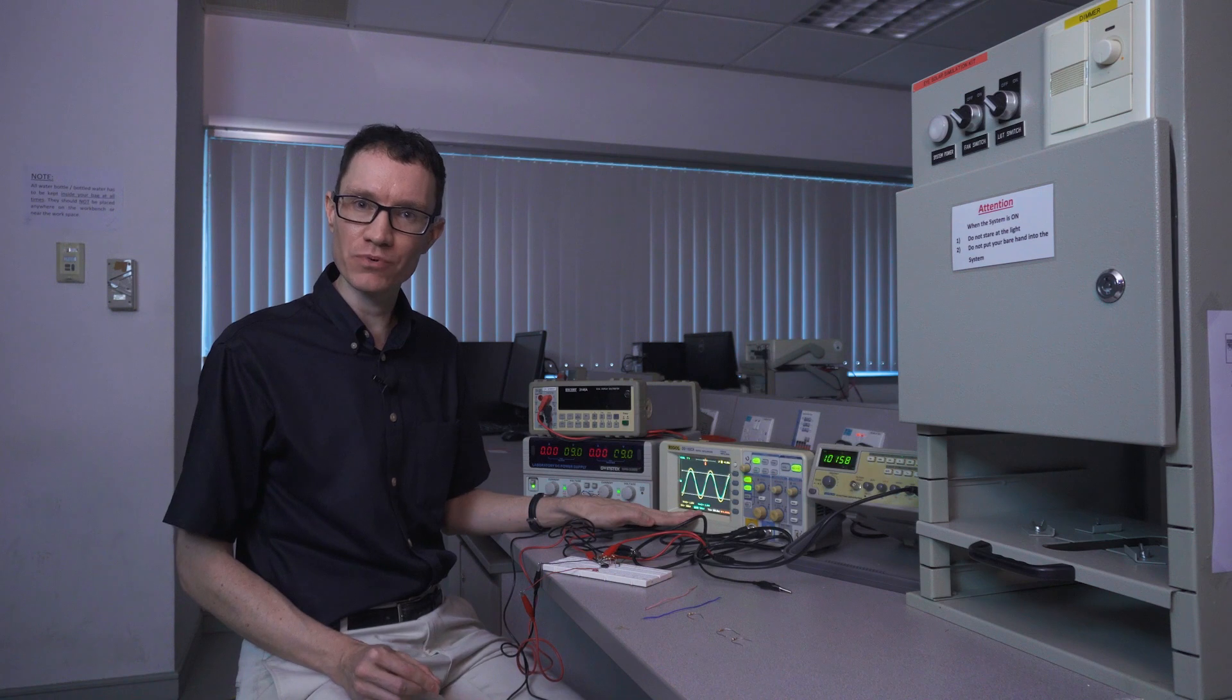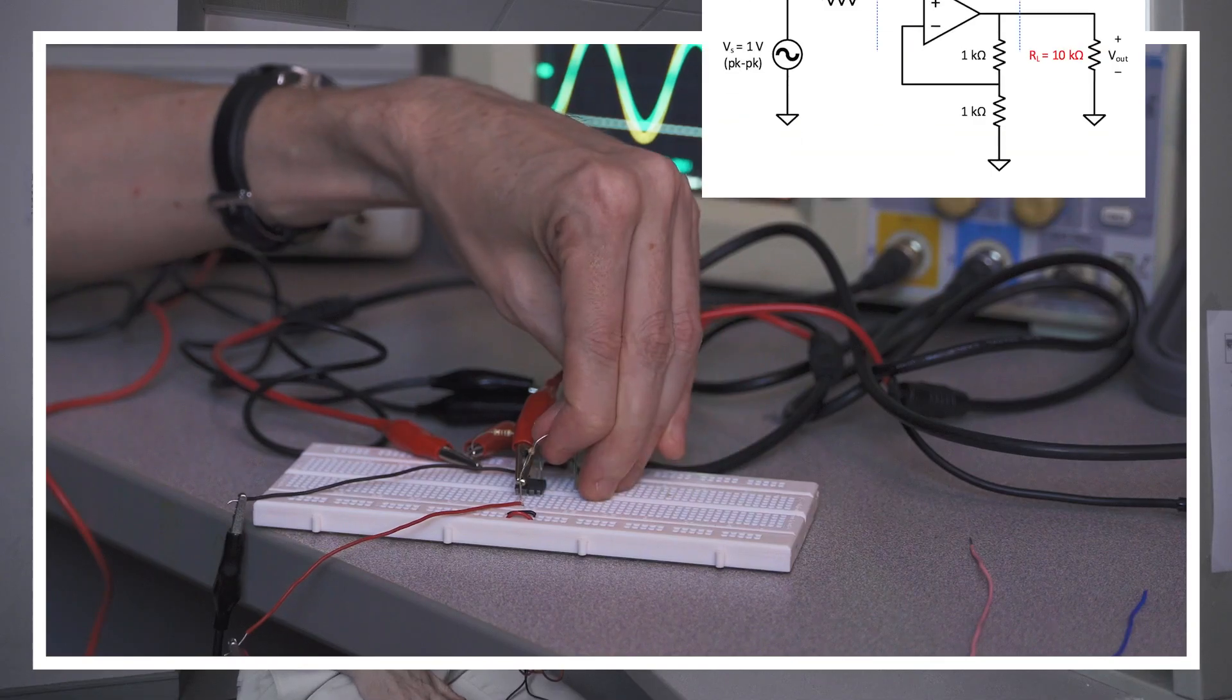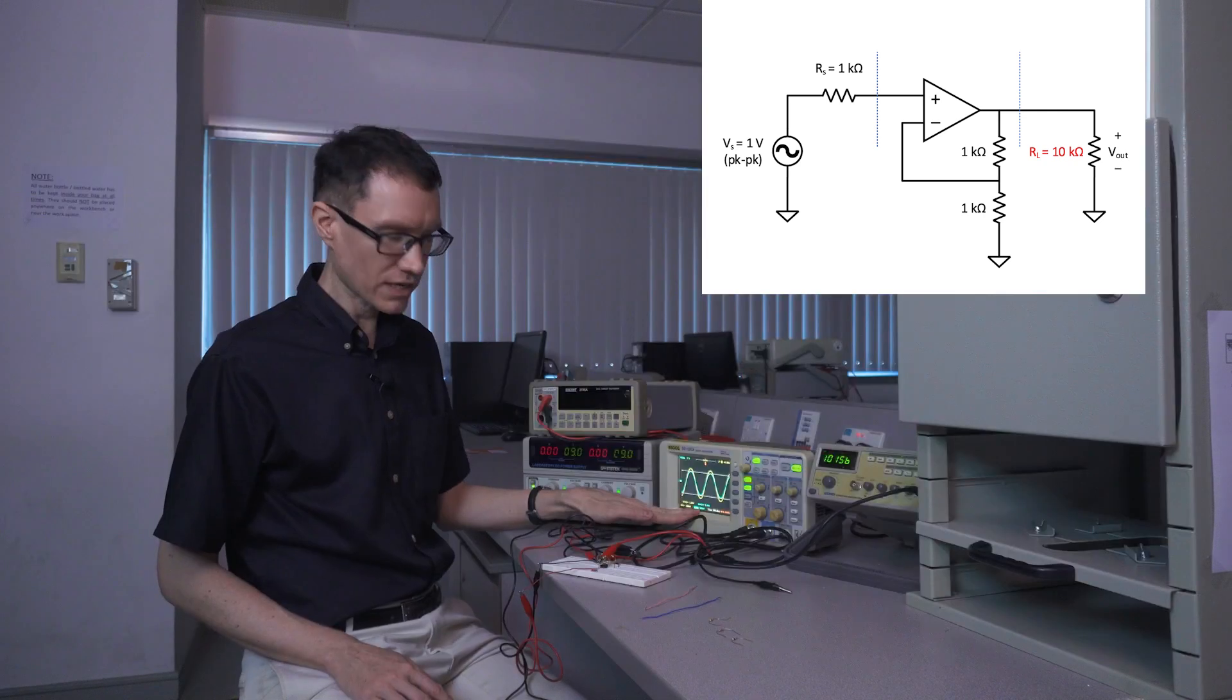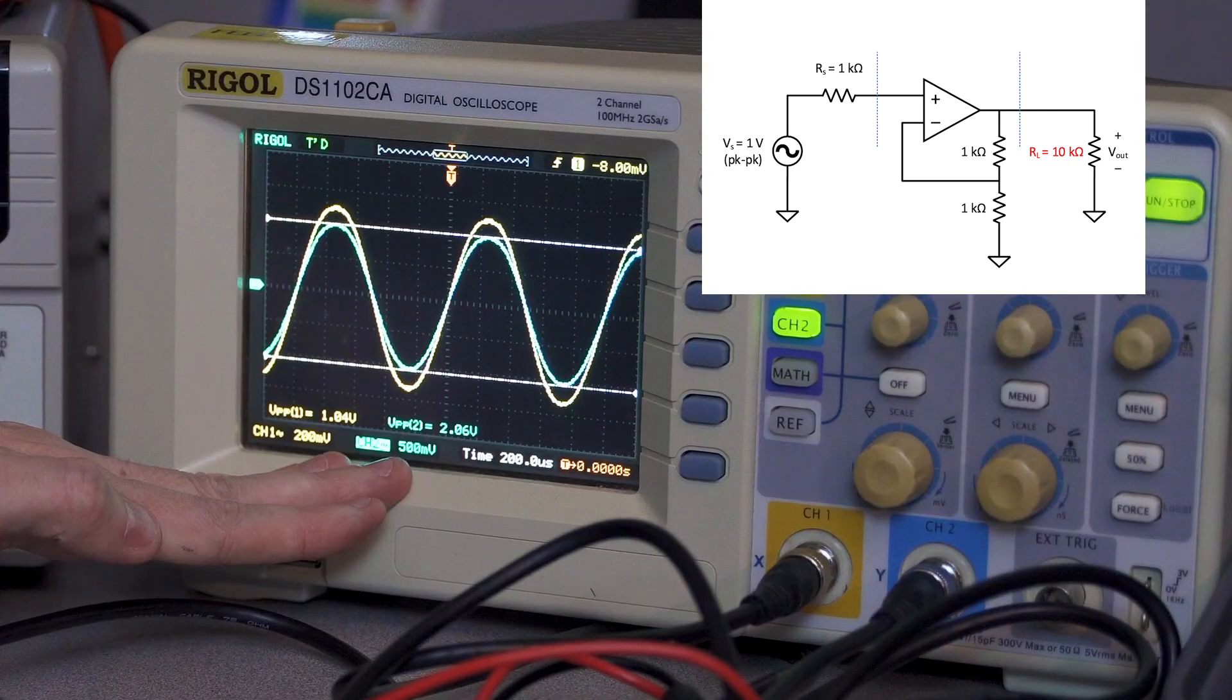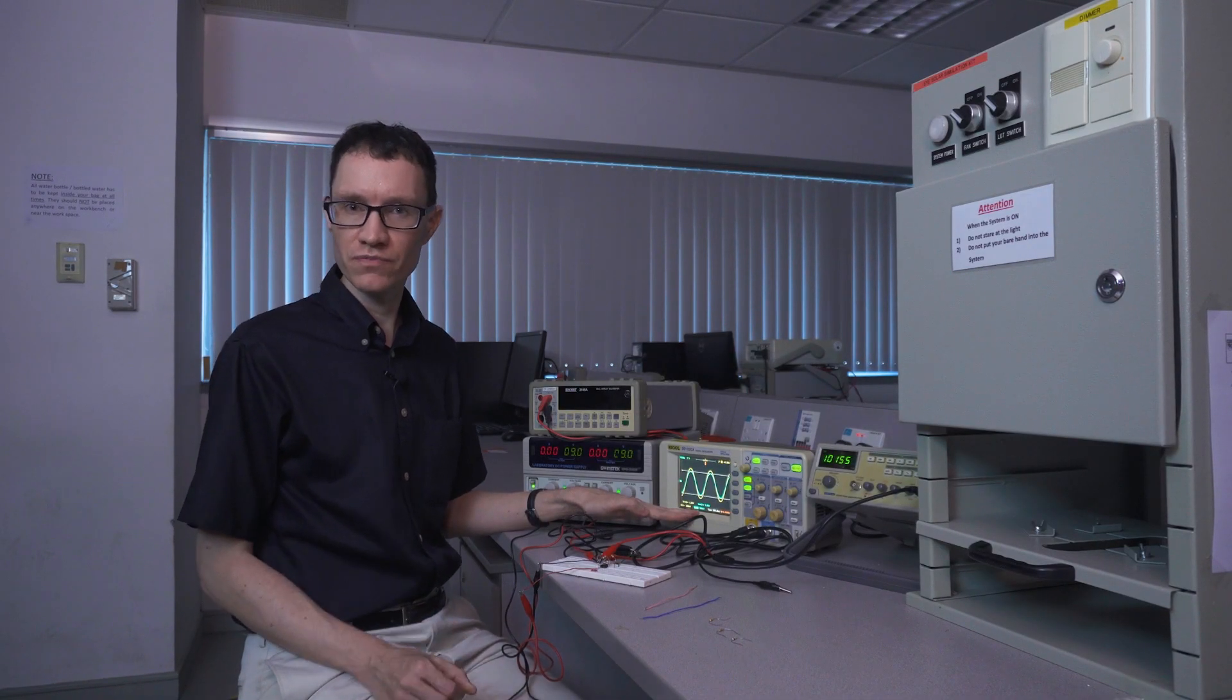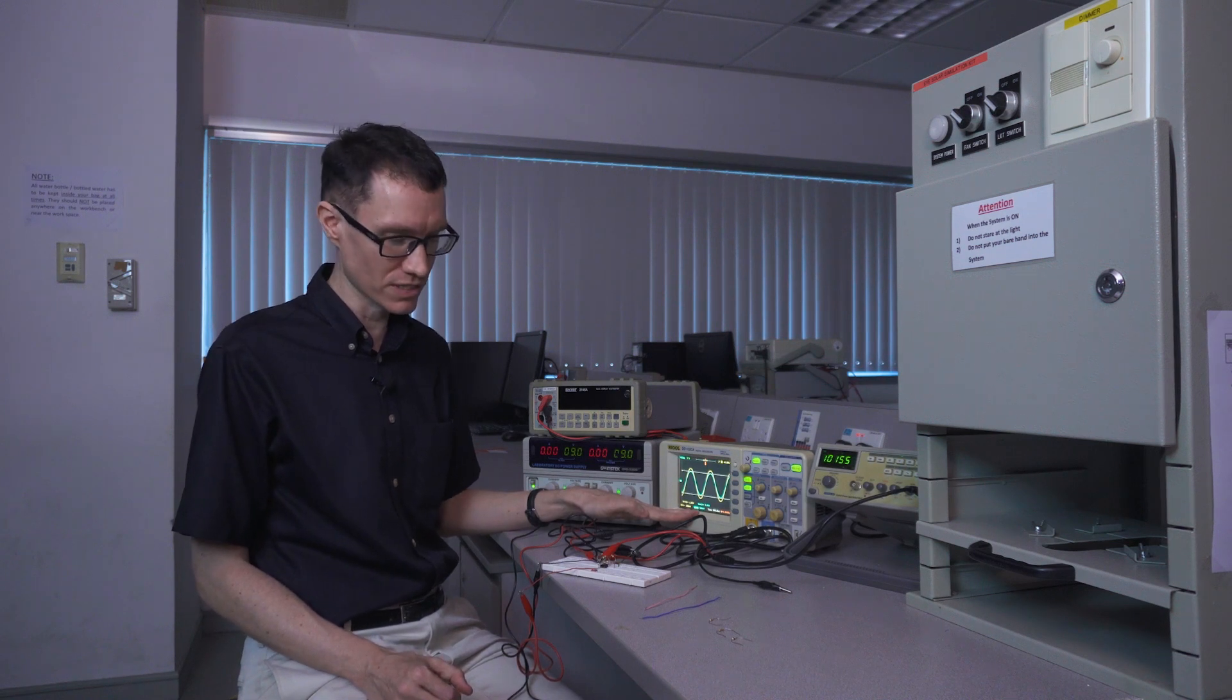Let's change the output load resistor. Let's change it to 10 kiloohms and we'll see how the peak to peak voltage changes. I can confirm that we still have a 2 volt peak to peak signal at the load. That's the power of using an amplifier. Our load voltage is no longer dependent on the size of the load resistance.